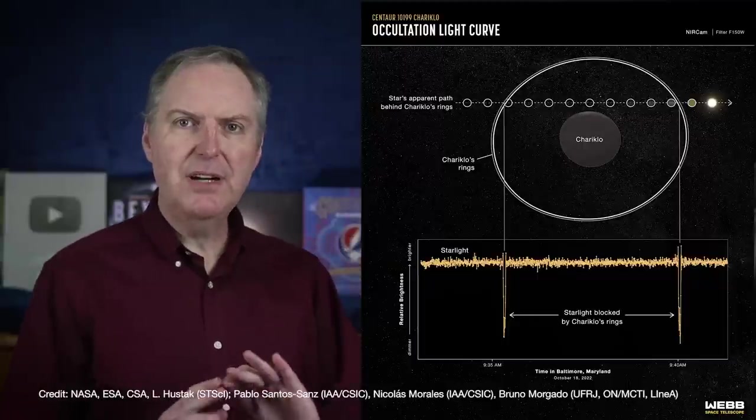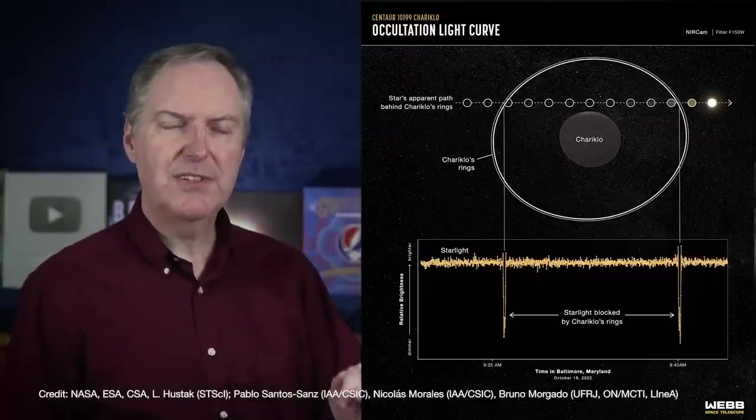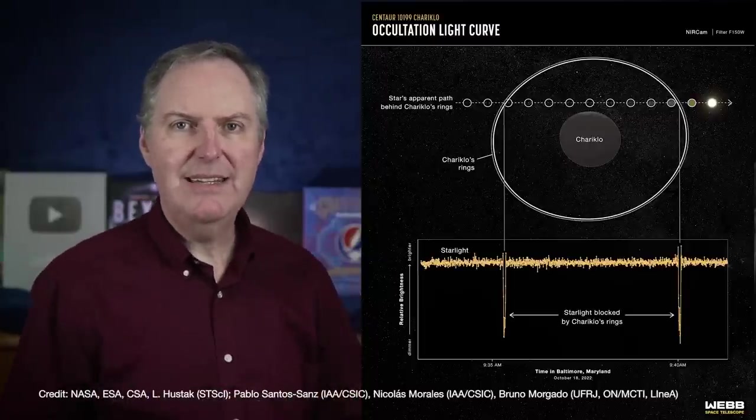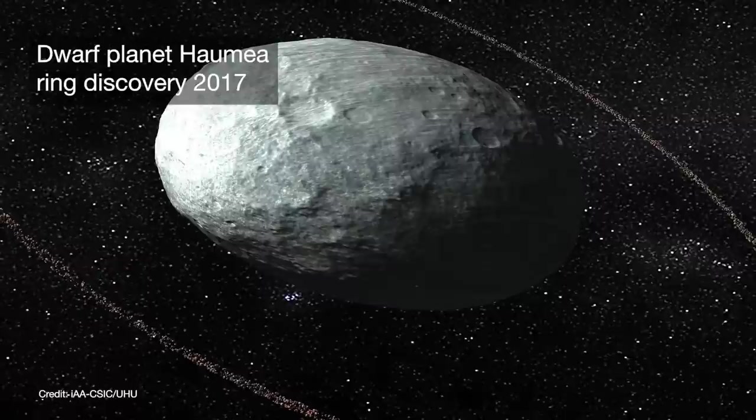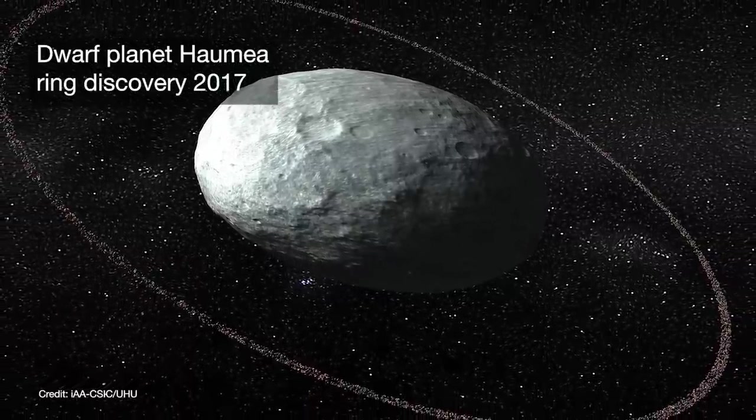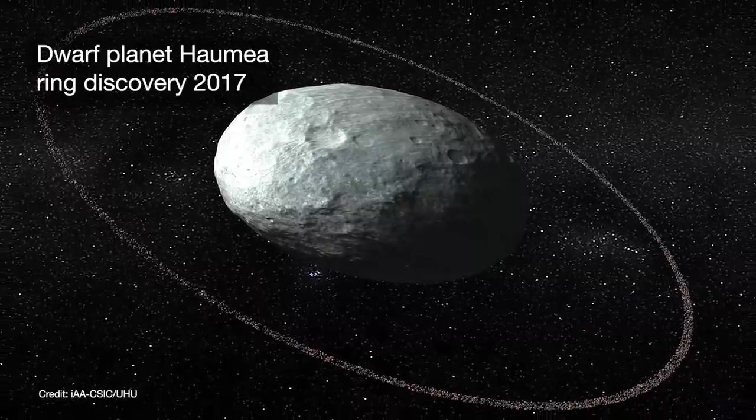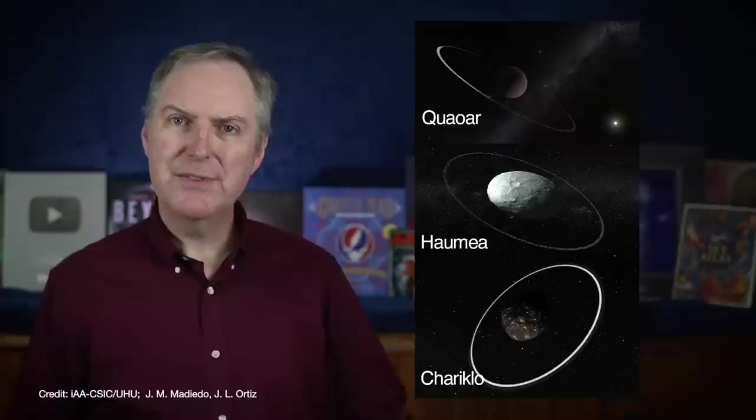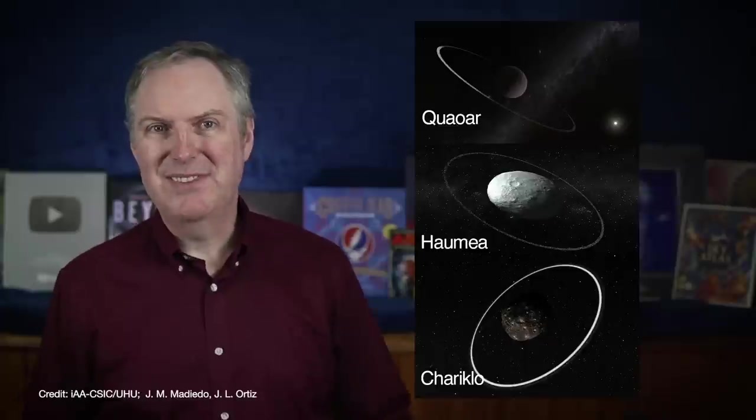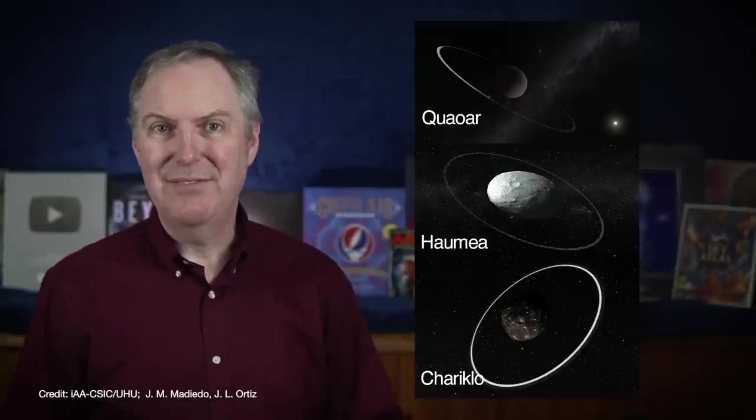This time the asteroid passed just underneath Webb's line of sight to the star, so it didn't see a main occultation, but it could still detect the tiny dips caused by the rings. Another ring system was discovered around the dwarf planet Haumea in 2017 during another stellar occultation. So rings around small solar system bodies aren't necessarily new, although it's still pretty amazeballs that small bodies like these can actually have rings.